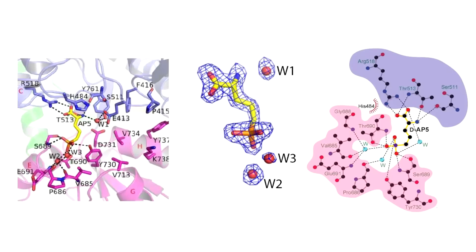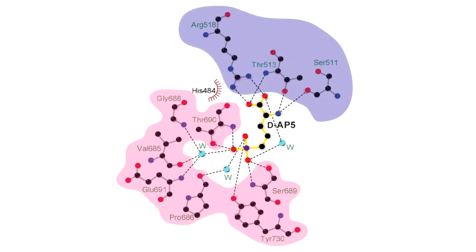In DAP5 binding, residues from the upper lobe form polar interactions with the alpha-carboxylate and alpha-amino groups of DAP5, and the amino group is capped through van der Waals interactions with a histidine. The amino acid residues involved in binding to the lower part of the binding domain are similar between the glutamate-bound and the DAP5-bound structures. However, the placement of the phosphonal group in DAP5 pushes and rearranges the orientation of amino acid residues through direct and water-mediated polar interactions.